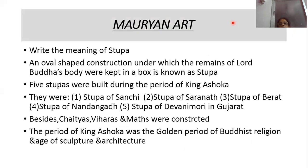The next topic is the Mauryan Empire. The Mauryan Empire was established by Chandragupta Maurya. The most famous Mauryan king was King Ashoka. He was the first king to receive the title Emperor. After the Battle of Kalinga, he embraced the Buddhist religion.